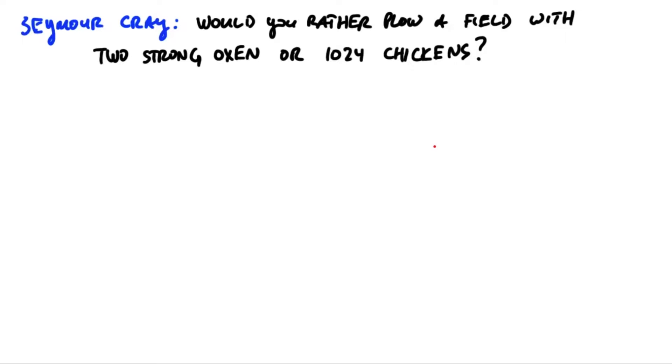You might have watched the intro video for this class where I quoted the American supercomputer designer Seymour Cray. If you were plowing a field, which would you rather use, two strong oxen or 1,024 chickens?